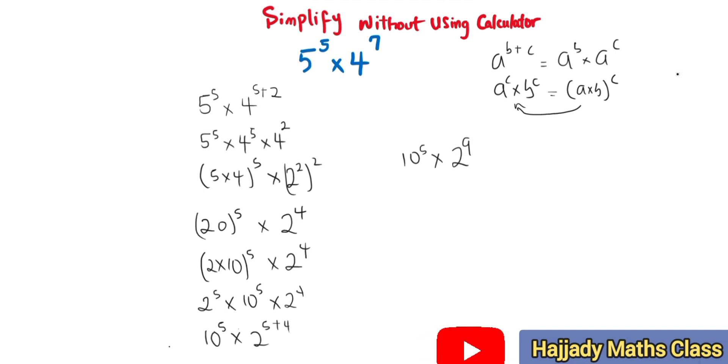From here we know this is the same thing as 512, which is 2 raised to power 9, multiplied by 10 raised to power 5. My answer can be 512 with 5 zeros, or my answer can be in standard form: 5.12 times 10 raised to power 7.